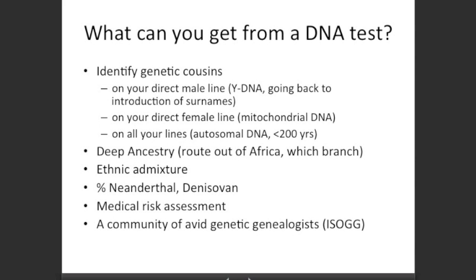So, taking a big step back — what can you get from a DNA test? The most obvious thing is you can identify genetic cousins. These may be on your direct male line via your Y-DNA, which follows the surname and goes back at least to the introduction of surnames. On your direct female line you can connect using mitochondrial DNA, and on all your lines you can connect using autosomal DNA, though the reach there is only about 200 years, or about 5, 6, or 7 generations.